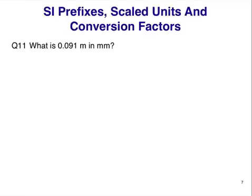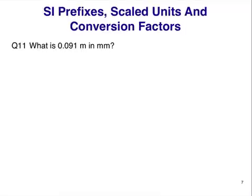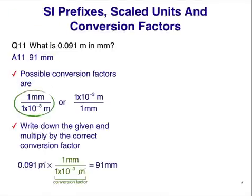Let's finish with two more examples. What is 0.091 meters in millimeters? Read the question carefully. What units are given and what units are required for the answer? Pause here and work out your answer. The answer is 91 millimeters. First, write down the two possible conversion factors as ratios. Each one must contain meters and millimeters, the units given and the units required. Next, we'll write down what is given and multiply it by one of the two conversion factors, choosing the correct one based on dimensional analysis. The correct answer is 91 millimeters.